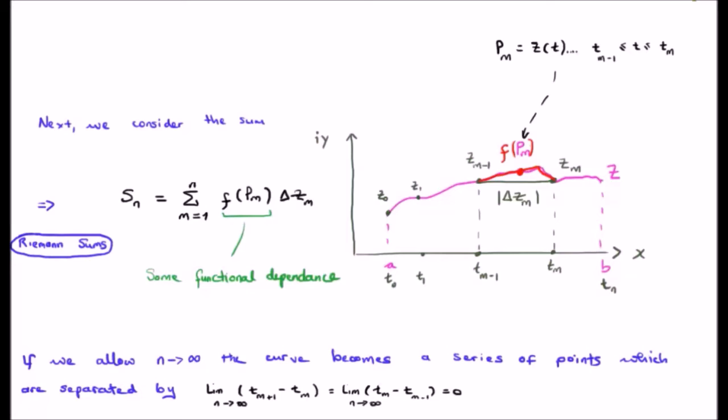In order to calculate the total, then, of course, we sum along the whole curve, going from m equals 1 to m equals n. This, of course, is exactly what happens with the Riemann sum.